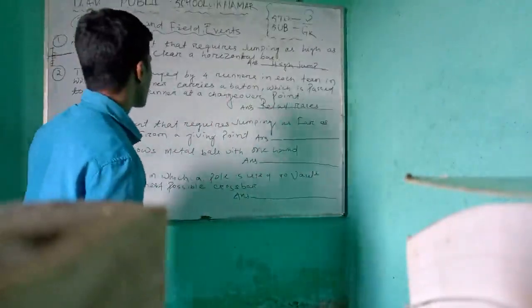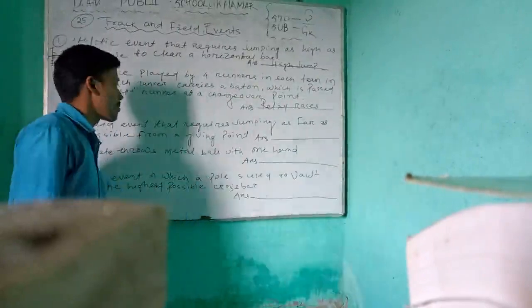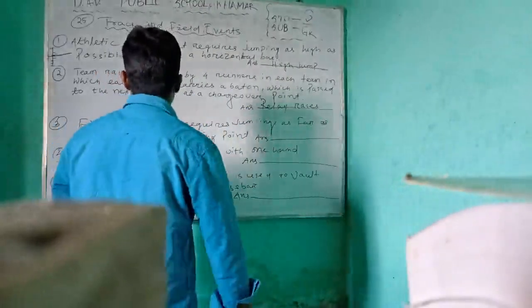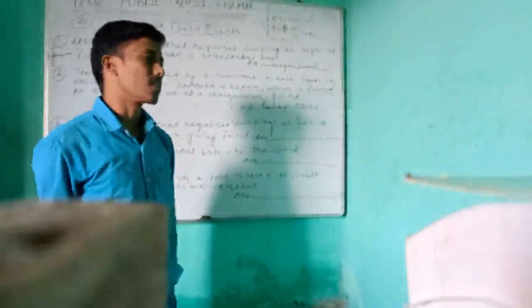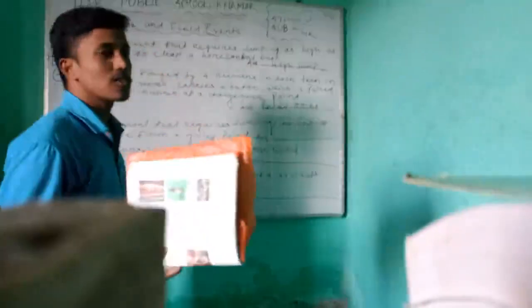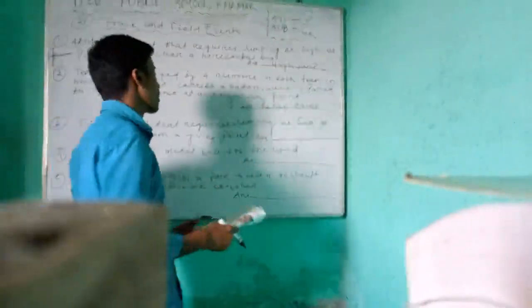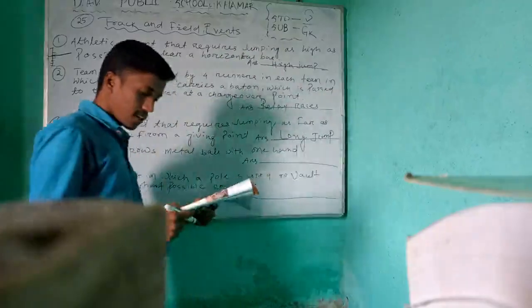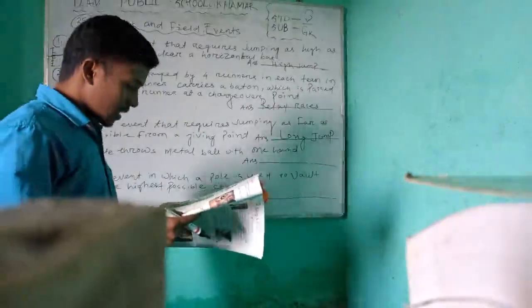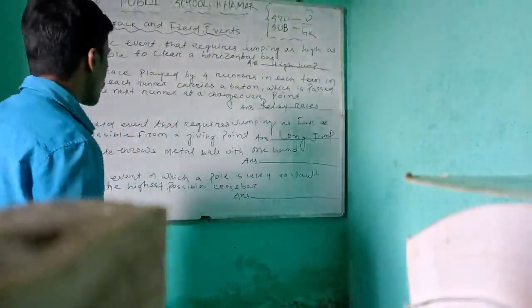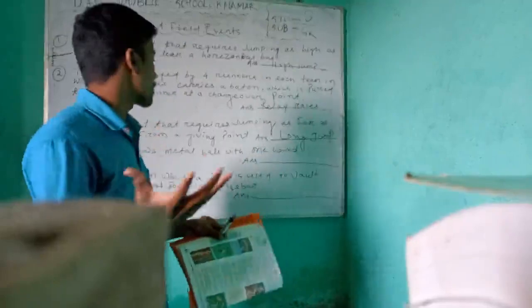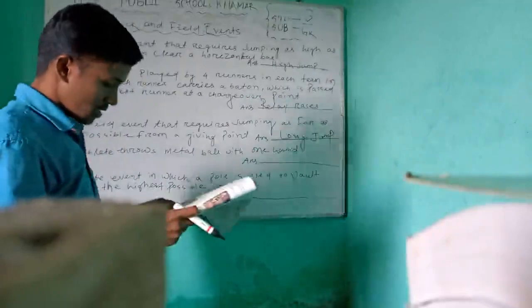The third question: a field event that requires jumping as far as possible from a given point — that is long jump. The fourth question: an athlete throws a metal ball with one hand — that is called shot put.